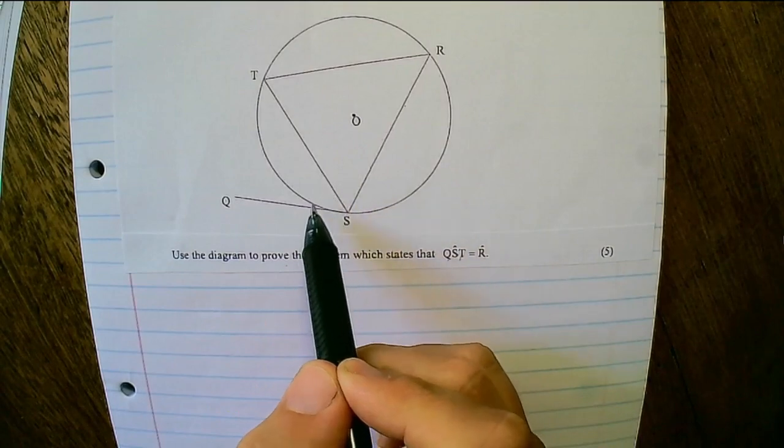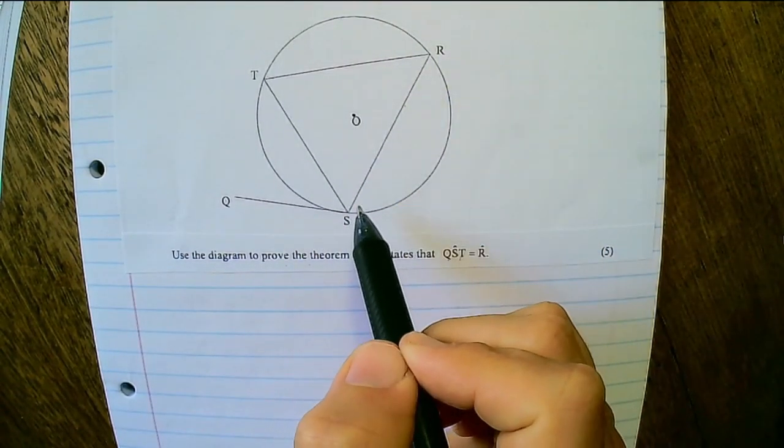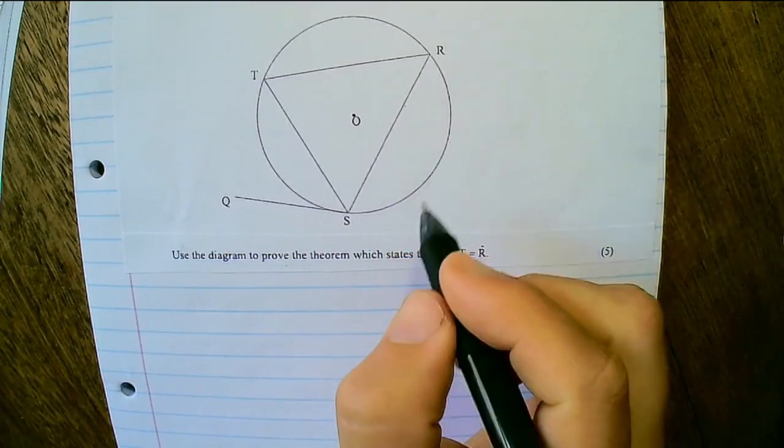So we need to prove the Tan-Chord theorem. When we make a proof, we cannot use the Tan-Chord theorem and simply make that statement.